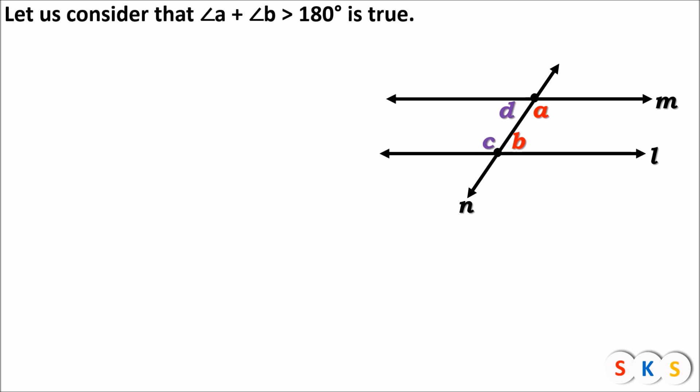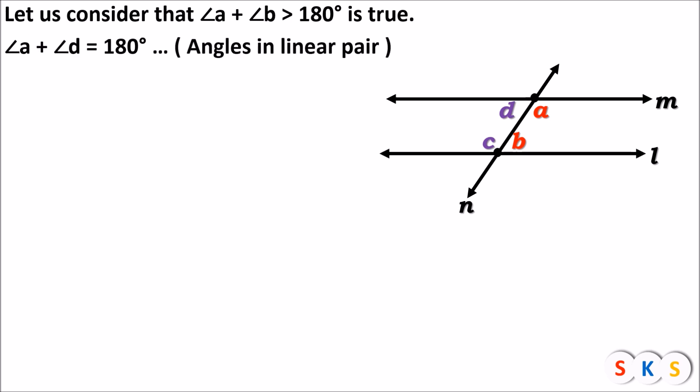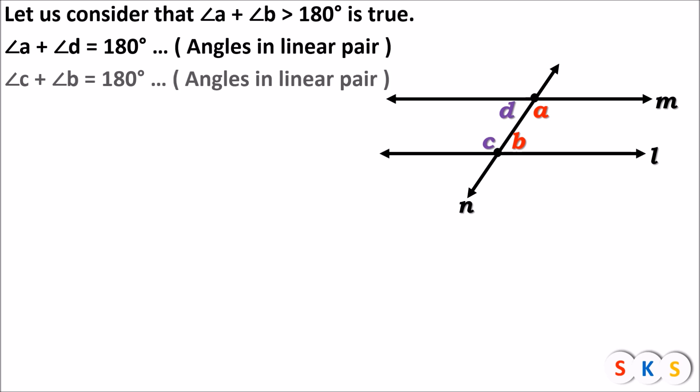Now we consider the second possibility: angle A plus angle B is greater than 180 degrees. In this figure, angle A and angle D form a linear pair, so the sum of these two angles is 180 degrees. Angle C plus angle B is also 180 degrees — angle C and angle B form a linear pair. Now we add these two equations: angle A plus angle D plus angle C plus angle B equals 180 plus 180 degrees.